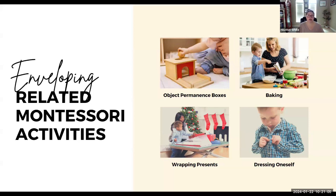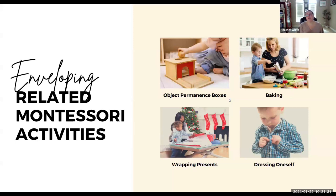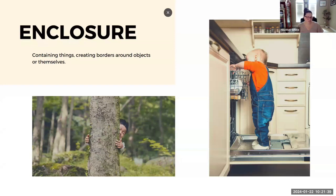Young children, especially those in the enveloping schema, will really enjoy an object permanence box. There are different versions as the child gets older and is ready for more challenge — some have doors or drawers on the front so the child has to go looking for the ball, and there's also a coin deposit box where a small coin is dropped into a slot. All versions reinforce the idea that the object still exists even when it can't be seen.